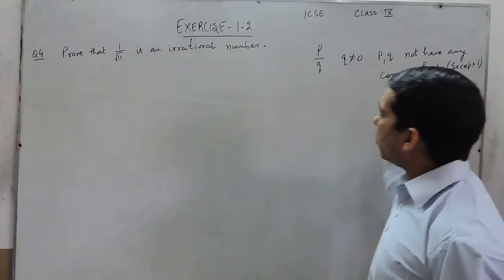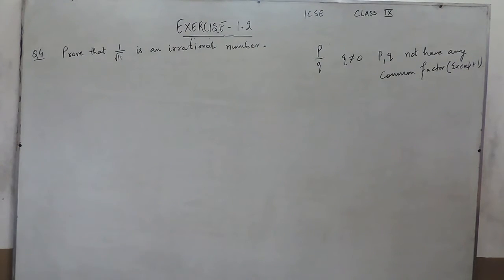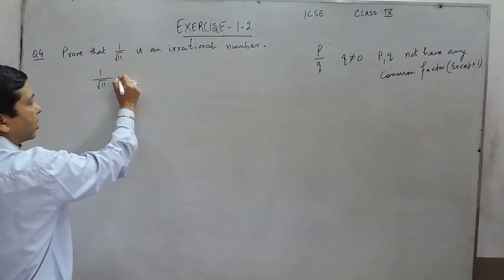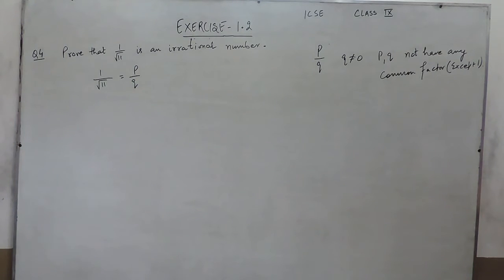So, when we are talking about this as a rational number, this can also be solved as question number 1, where we will assume that 1 upon under root 11 is rational, so I can write it as P upon Q.